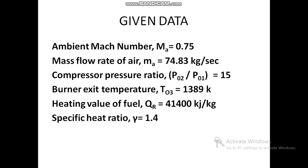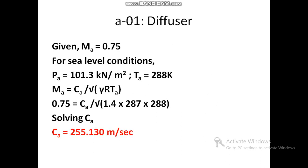Now, coming to the problem. The data given are: ambient Mach number MA equals 0.75; mass flow rate of air equals 74.83 kg per second; compressor pressure ratio P02 divided by P01 equals 15; burner exit temperature T03 equals 1389 Kelvin; heating value of fuel QW equals 41,400 kJ per kg; and specific heat ratio gamma equals 1.4. We will now solve the problem device by device, starting with the first device: A to 01.